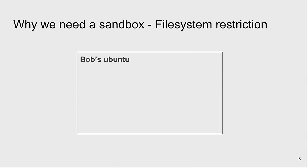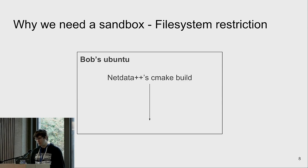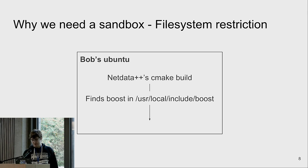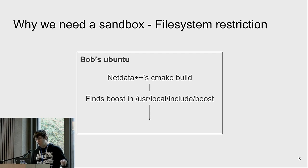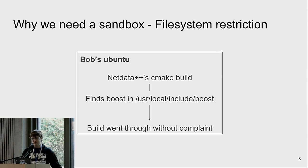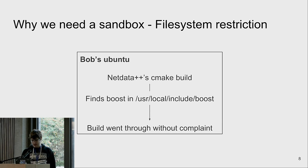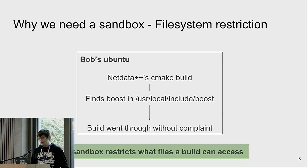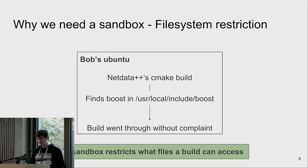Looking into this imaginary package, we see there's a CMake build system which also looks in different locations to find its dependencies — and it found a Boost that Bob had installed manually at some point. So the build went through without any complaints. A build sandbox would have prevented that because it enforces that the build can only access certain files.